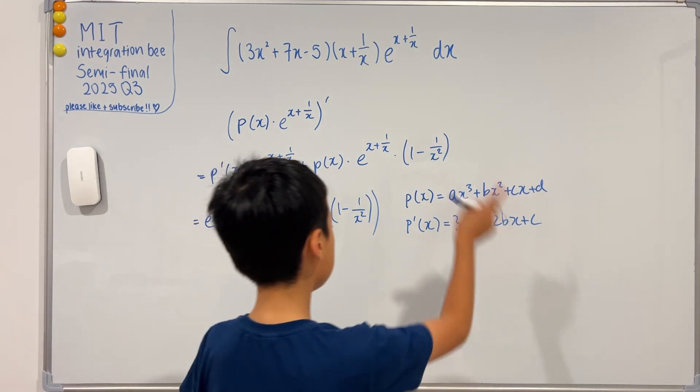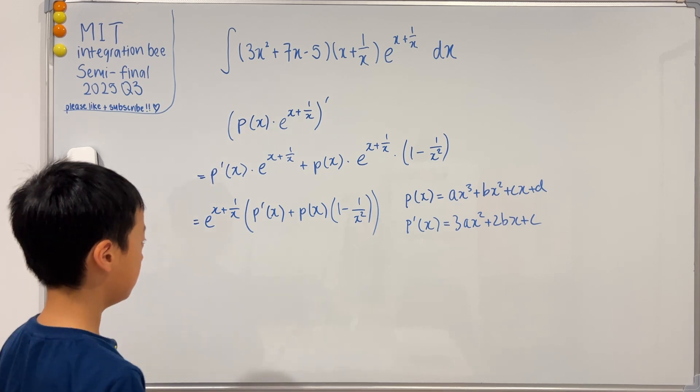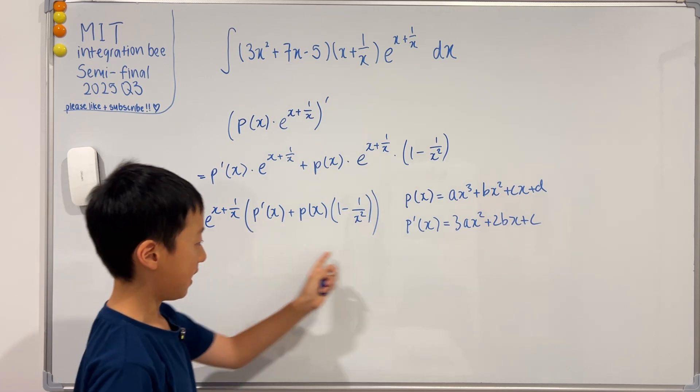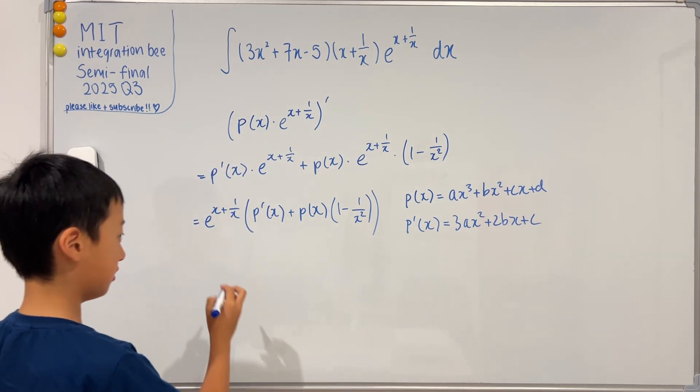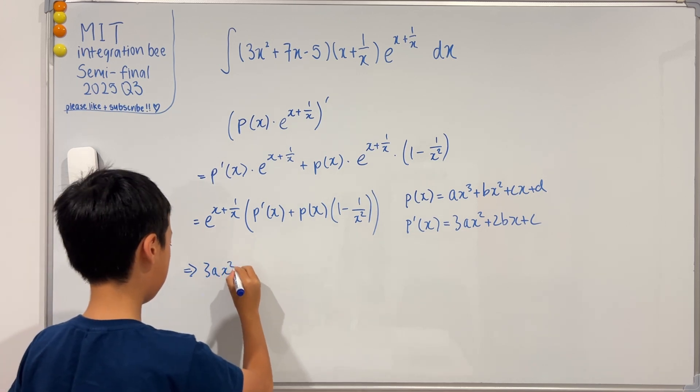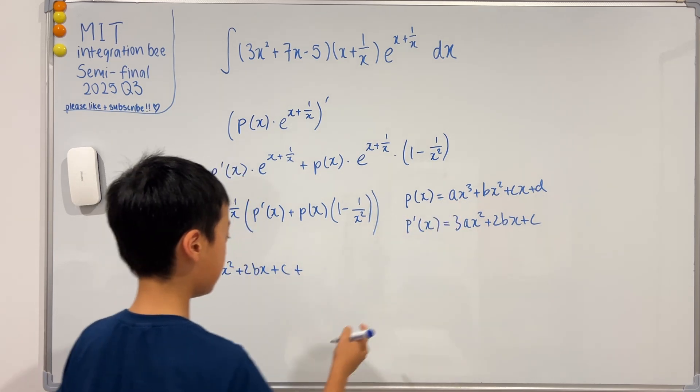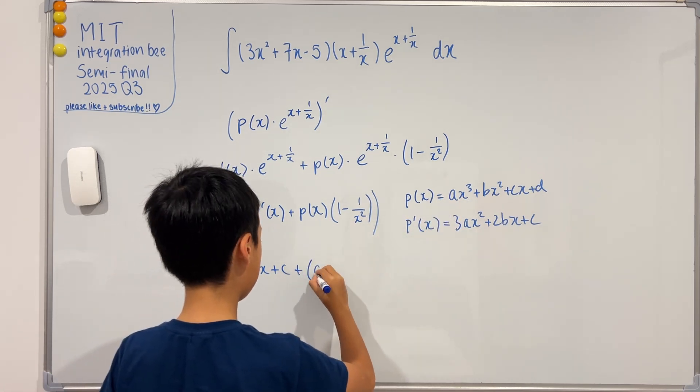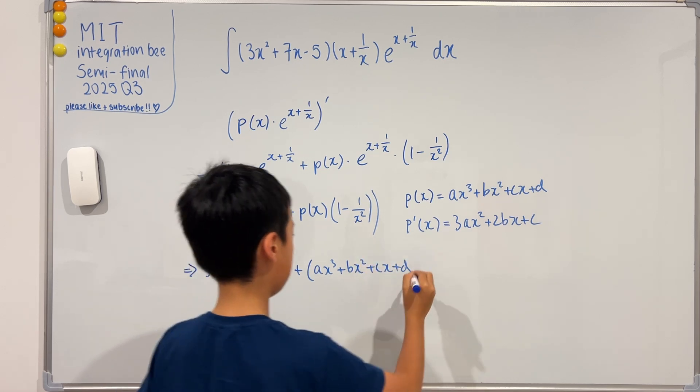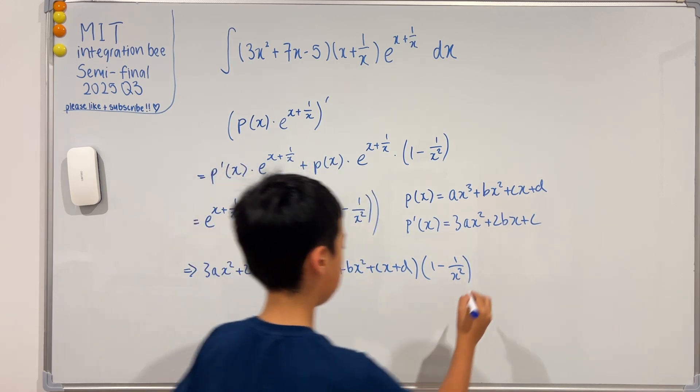Now that we have this, we can create the equation. This will have to equal to that. P prime of x is 3ax squared plus 2bx plus c, and then we add p of x, which is ax cubed plus bx squared plus cx plus d, multiplied by 1 minus 1 over x squared. This has to equal to the integrand.